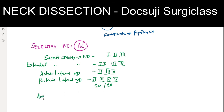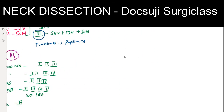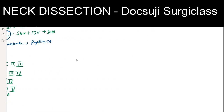The last type is the anterior or central dissection, which involves dissection of Level 6 lymph nodes, commonly indicated in thyroid surgery. So these are all the types of neck dissection: radical neck dissection, MRND, and selective neck dissection.